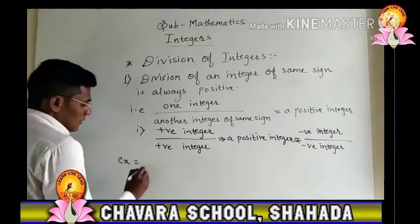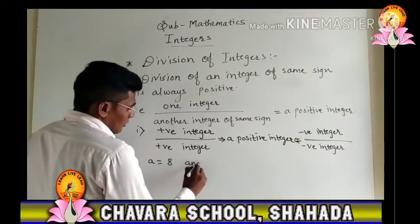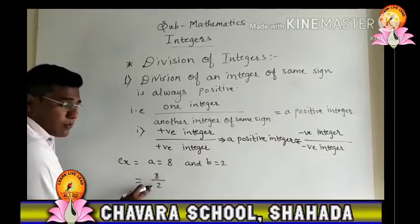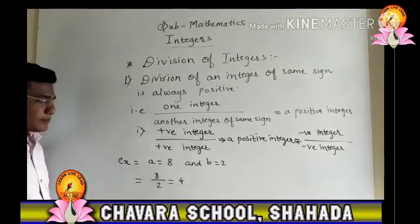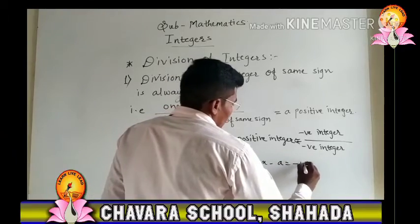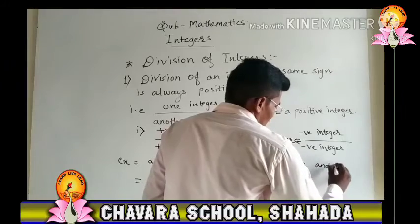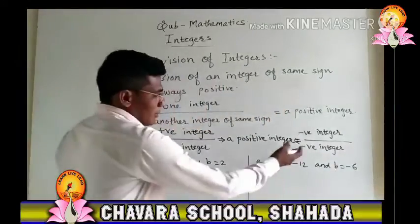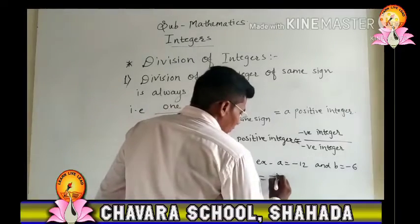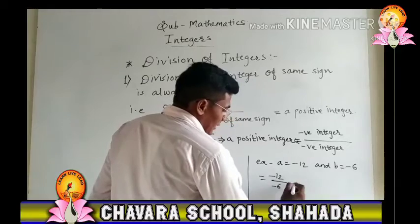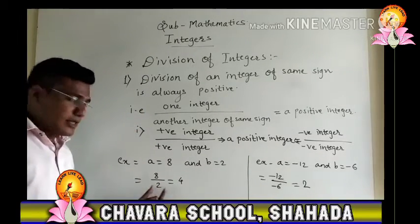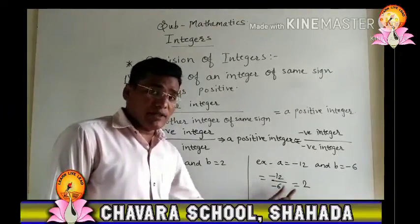For example, suppose a equals 8 and b equals 2. So 8 divided by 2 — positive integer divided by positive integer. The answer is a positive integer. Similarly, negative 12 divided by negative 6 also gives a positive integer.